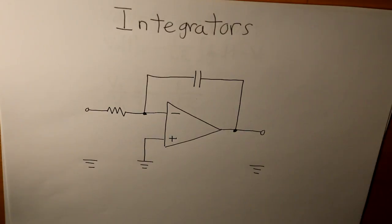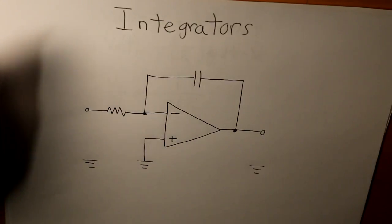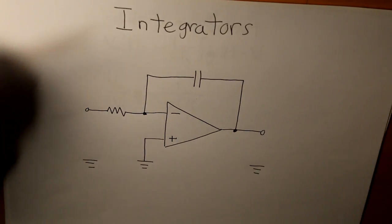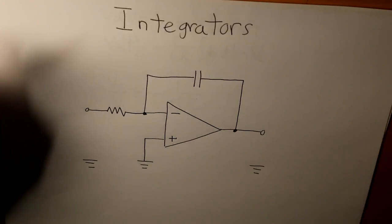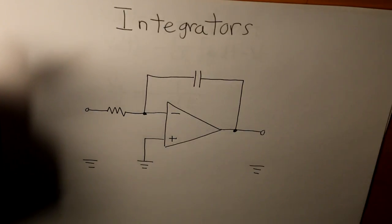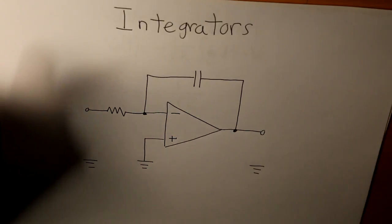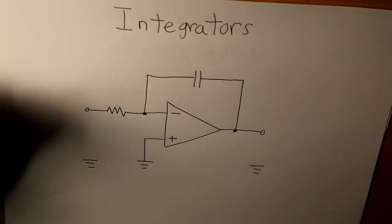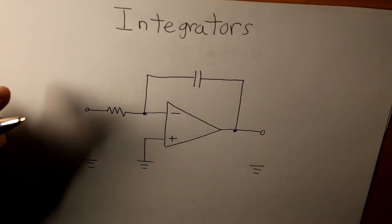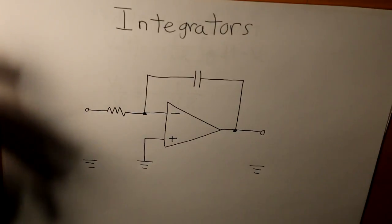So what are integrators? Well, integrators in electrical circuits are op amps, and these op amps are supposed to produce an output that is essentially the integral of whatever your input is. To do that, we basically have the same information as what an ideal op amp is, but now we change things up a bit in terms of what kind of elements we put in the input and on our negative feedback part of the circuit.